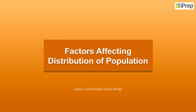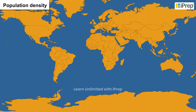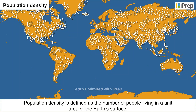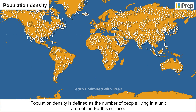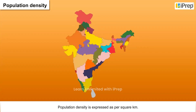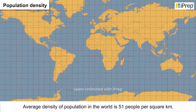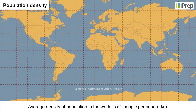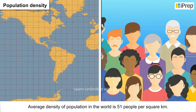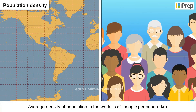Factors Affecting Distribution of Population. Population density is defined as the number of people living in a unit area of the earth's surface. Population density is expressed as per square kilometers. The average density of population in the world is 51 people per square kilometer.